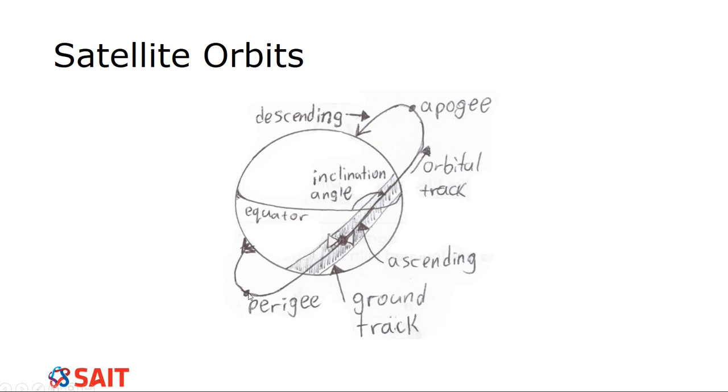Then we have two points on the orbital track. One is the perigee and the other one is the apogee. So the perigee, it is the point where we have the descending side of the track changing into ascending. So we have ascending going up, descending going down. The apogee is where the opposite happens, where we go from ascending to descending.